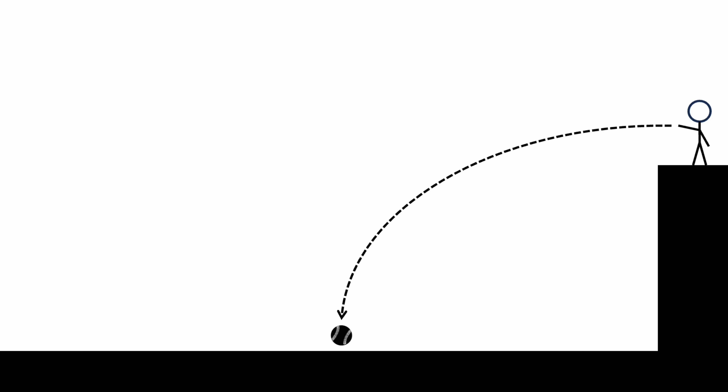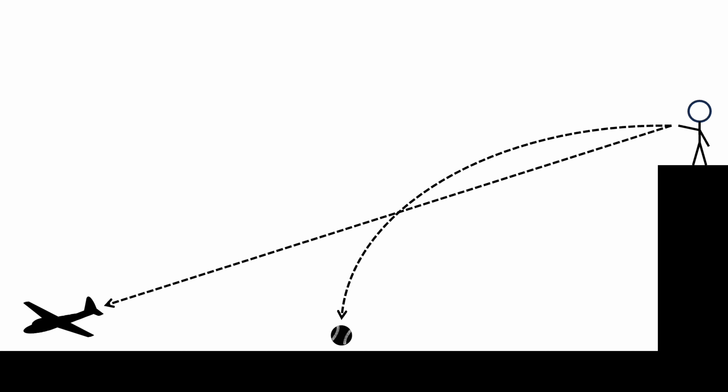Now that we understand vectors, let's look at the difference between gliders and projectiles. First, consider a projectile like this baseball. When a projectile is thrown, it curves downwards and accelerates towards the ground. When a glider is thrown, however, it does not curve downwards or accelerate, but instead descends in a straight line at a constant speed.